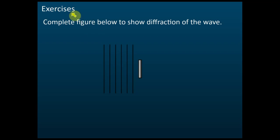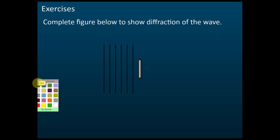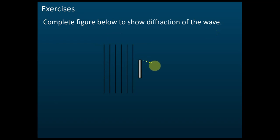We have an exercise: complete the figure below to show the fractions of the wave. This is an obstacle. When we draw the diffracted lights, you need to know that after the wave passes through the obstacle, it will spread. So we draw the guideline.